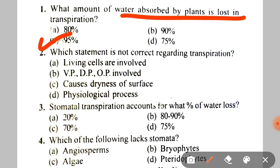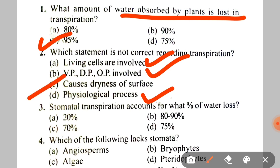Second question: which statement is not correct regarding transpiration? A. Living cells are involved — obviously correct. B. Vp, Dp and Op are involved. C. Causes dryness of the surface. D. Physiological process. Transpiration is a physiological process involving vapor pressure, diffusion pressure, and osmotic pressure. But the surface is not dried, so the correct answer is C.